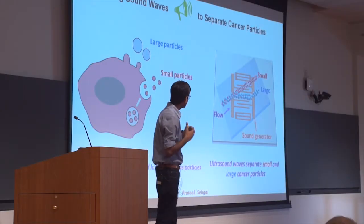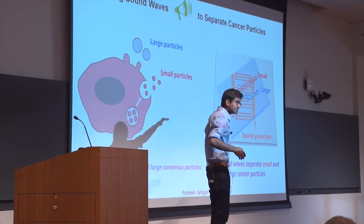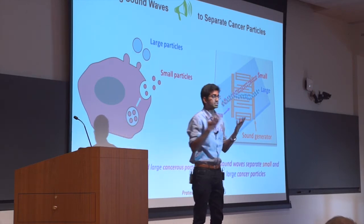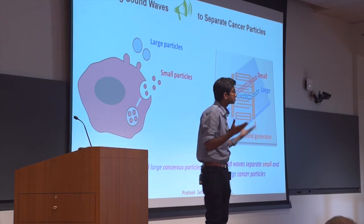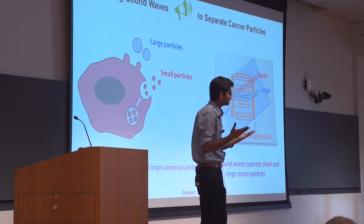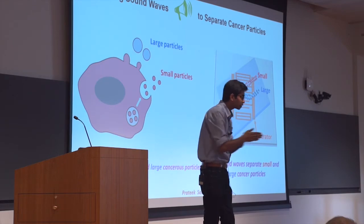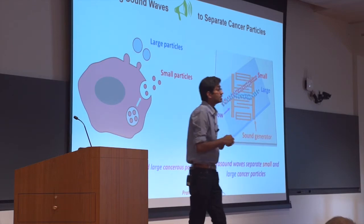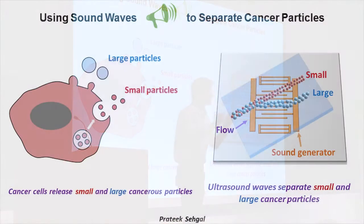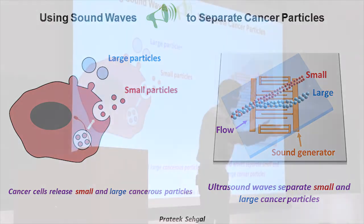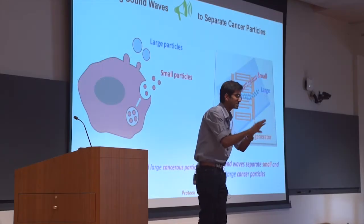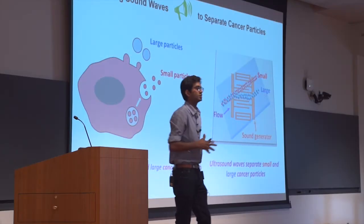In my acoustic system, I have a sound wave generator — as shown by these yellow lines — that generates the sound waves, and I have a mixture of small and large cancer particles flowing over the sound wave generator. Because small and large cancer particles experience different forces, the large cancer particles move to a different location relative to the small cancer particles, and this results in the separation of the two populations.